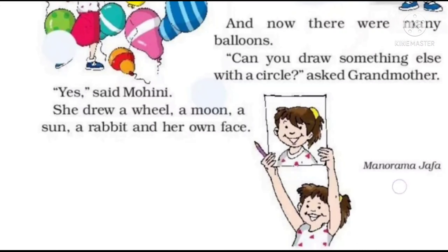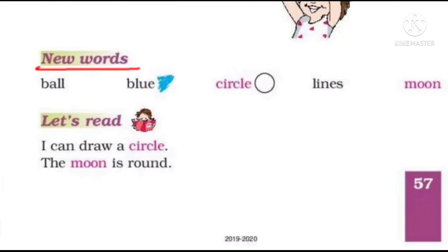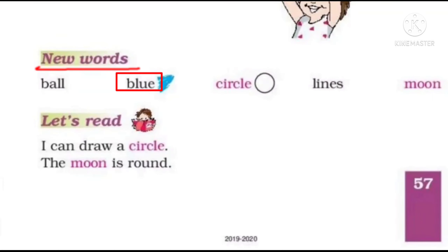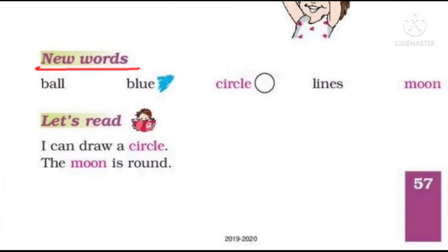So this is our chapter. Yahaan par hamara chapter finish hota hai. Now let's see some difficult words or new words in the chapter. Ball means gend, yani jisse aap bat aur ball khelte ho. Blue means one kind of color. Circle matlab gol hota hai. Lines ke matlab Hindi mein rekha kahte hain. Moon.